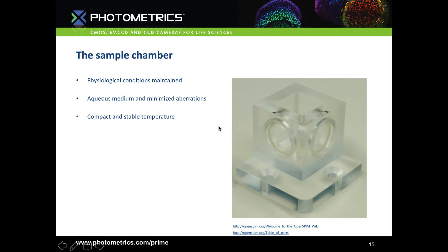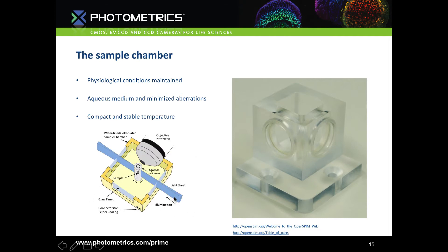A typical lightsheet sample chamber looks like a cube where the sample can be introduced from above. The chamber can be made both air and water tight, ensuring physiological conditions are maintained — for example, kept at 37 degrees if required. The lightsheet is introduced from the side illuminating the sample through the middle, and a water-dipping detection objective squeezes in through a circular opening that is then made water tight to preserve conditions within the chamber.